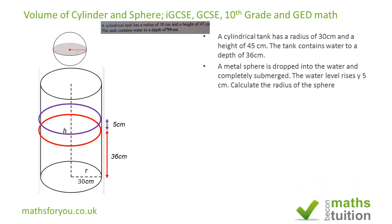Essentially, we've dropped a sphere into a cylinder of a total height of 45 centimeters. The cylinder has got water to a height of 36 centimeters. Now as a result of dropping this sphere into the cylinder, the water rises to a height of 5 centimeters, and we are asked to calculate the radius of the sphere that has been dropped in.